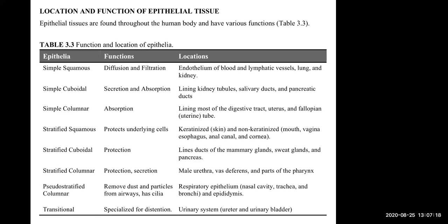Simple columnar helps with absorption, found a lot in your digestive tract. In the uterus and fallopian tube, cilia help move an egg along in a woman's reproductive tract. Stratified squamous protects underlying cells — keratinized on skin, non-keratinized in your mouth, oral cavity, esophagus, vagina, anal canal, and cornea. Stratified cuboidal helps with protection and is found in mammary glands, sweat glands, and pancreas. Stratified columnar is found in parts of the male reproductive tract and pharynx.